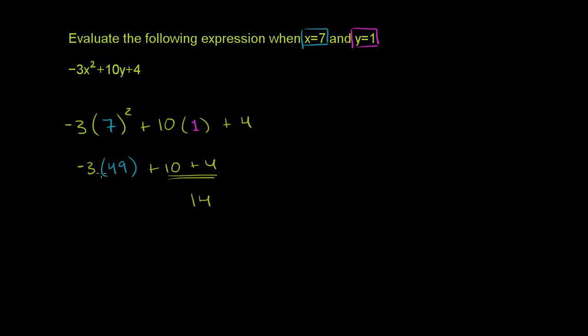This part right over here, -3 times 49. So 3 times 50 would be 150. 3 times 49 is 147. This is -147. So this right over here is -147.